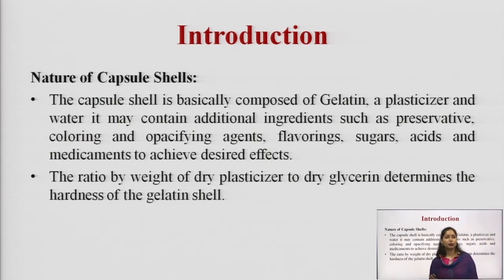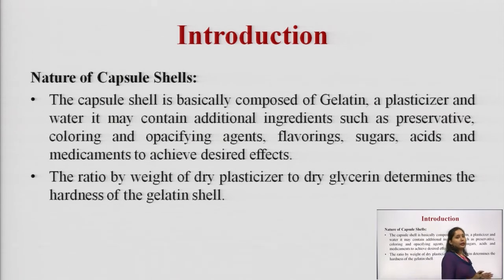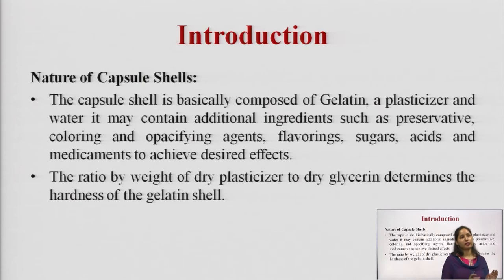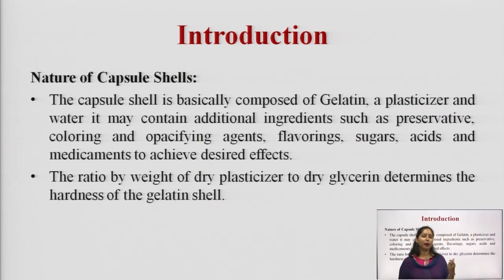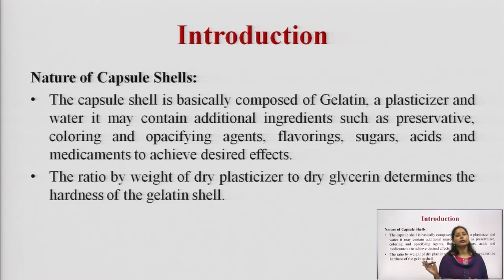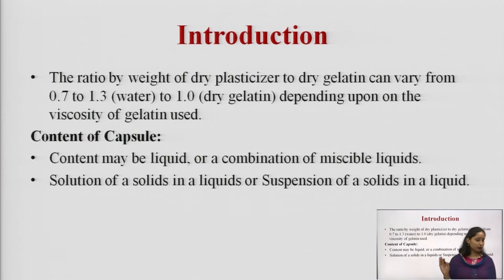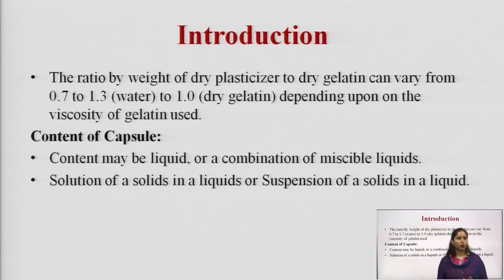Regarding the nature of the capsule shell: the capsule shell is basically composed of gelatin, plasticizer, and water — these three are the main components. Apart from these, it may also contain additional ingredients such as preservatives, coloring agent, opacifying agent, flavoring agents, sugars, acid, and medicaments. The ratio by weight of dry plasticizer to dry gelatin determines the hardness of the gelatin shell and can vary from 0.7 to 1.3 water to 1 dry gelatin, depending on the viscosity of the gelatin used.